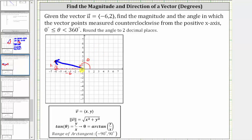We can determine the magnitude using the Pythagorean theorem, where the hypotenuse is normally c. If we replace c with the magnitude of the vector, we have the magnitude is equal to the square root of the quantity x squared plus y squared.